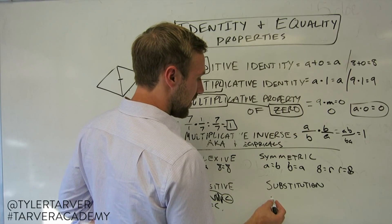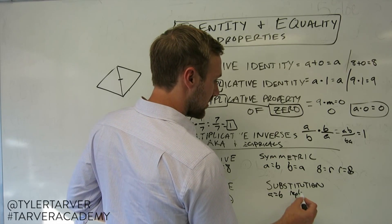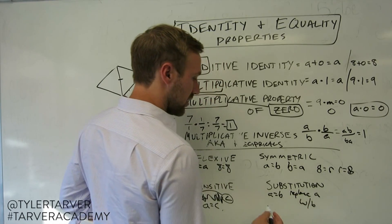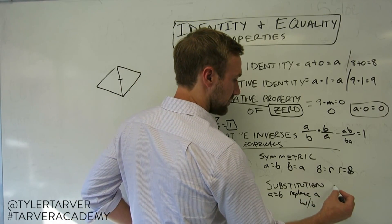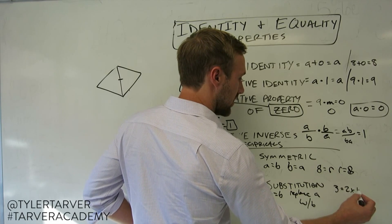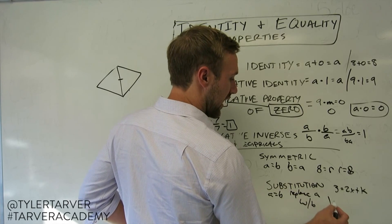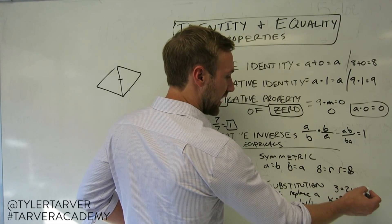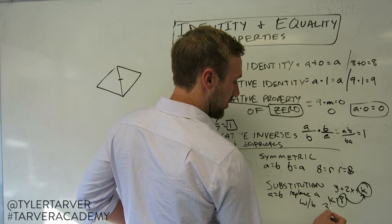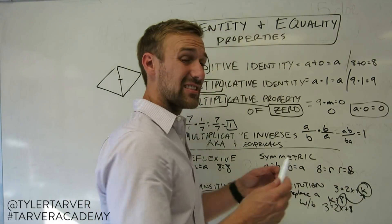Substitution: if a equals b, then I can replace a with b. So for instance, I've got 3 equals 2x plus k, and k equals 8. I can replace wherever k is with 8, so it'll be 3 equals 2x plus 8. And that's substitution.